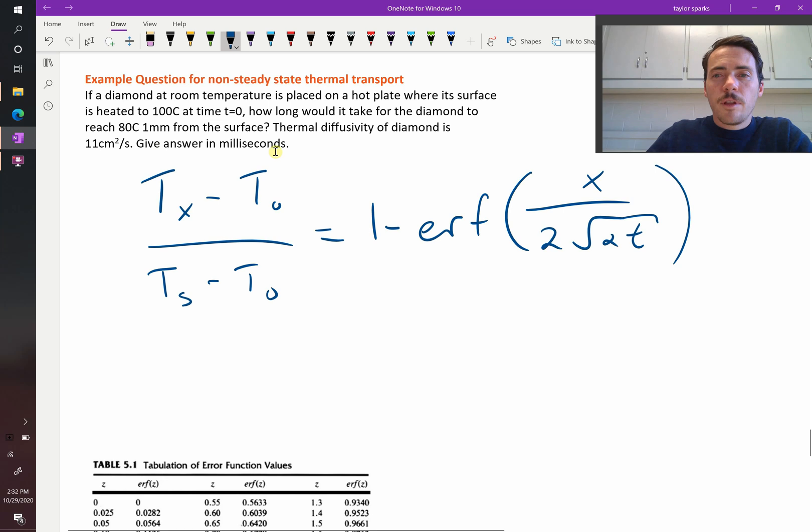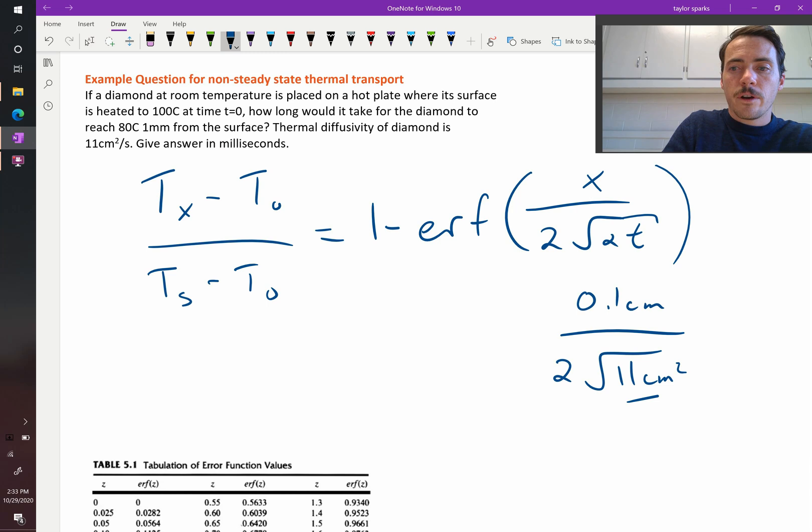So if we plug in the position, one millimeter, so that's 0.1 centimeter, we're going to plug in 0.1 centimeter here. We're going to divide it by two times 11 centimeters squared per second multiplied by time. Okay, we're going to set, so one minus the error function of all that.